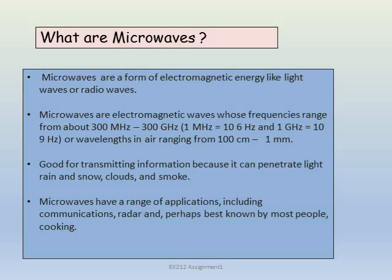What are microwaves? Microwaves are a form of electromagnetic energy like light waves or radio waves. Microwaves are electromagnetic waves whose frequencies range from about 300 MHz to 300 GHz, or wavelengths in air ranging from 100 cm to 1 mm. They are good for transmitting information because they can penetrate light, rain and snow, clouds and smoke.